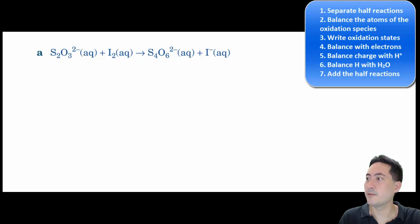So the steps are: separate half reactions, balance the atoms of the oxidation species, write the oxidation states, balance the electrons, balance the charge with H+, balance out the H pluses with H2Os, and then add the half reactions together. So here we go. Step one, we have to separate out the half reactions.